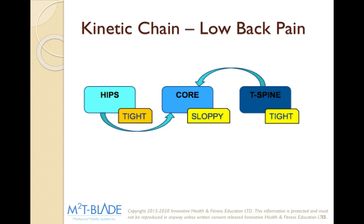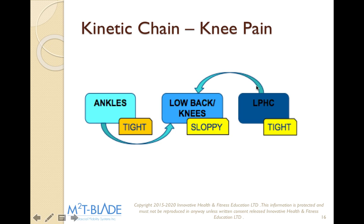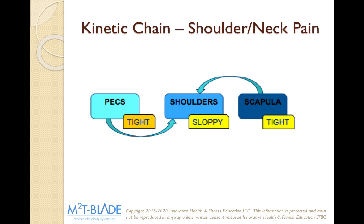A review of our kinetic chain. First, lower back pain. Kinetic chains describe how one thing in the body affects another — how our body works together in a fluid pattern, affected by each joint. If we're not looking at the entire body, we can never really get rid of that pain. If somebody comes in with lower back pain, we need to look at the hips, core, and thoracic spine. With the knee, we look at the ankles, low back, and lumbopelvic hip complex — the ankles will be tight, the low back sloppy and weak, and the lumbopelvic hip complex tight. For shoulder and neck pain, we need to look at the pecs — pecs will be tight, shoulders tight and weak, and the scapula tight.